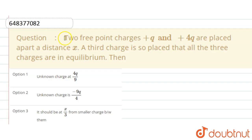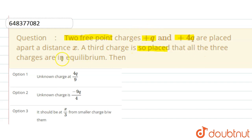Hello students. The question is: two point charges +q and +4q are placed at a distance x apart. A third charge is so placed that all three charges are in equilibrium. Which of these options are correct?